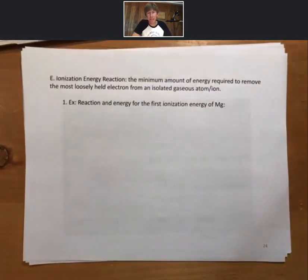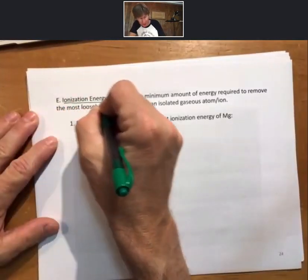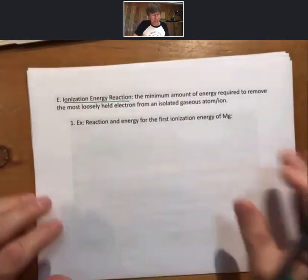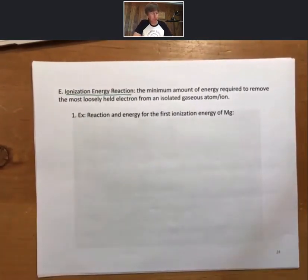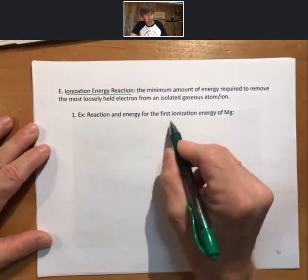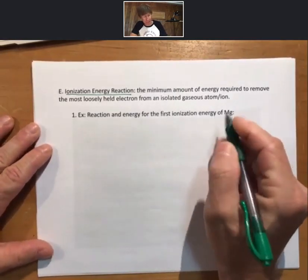Now, as far as losing electrons, let's look at something called the ionization energy reaction. That is another reaction that I can ask you to write. Yeah, I can ask you to write this one. So let's underline that. Ionization energy reaction is the minimum amount of energy required to remove the most loosely held electron from an isolated gaseous atom or ion. And so as an example, we'll do the ionization energy reaction for magnesium.